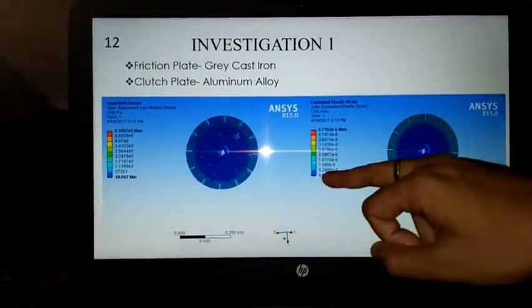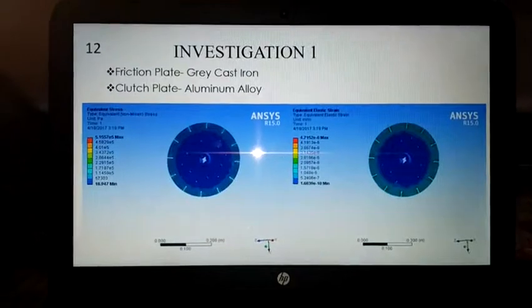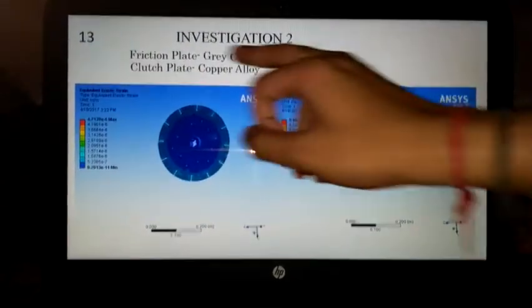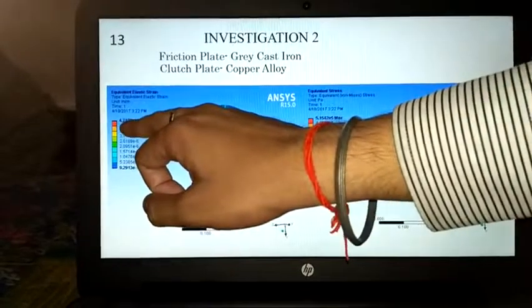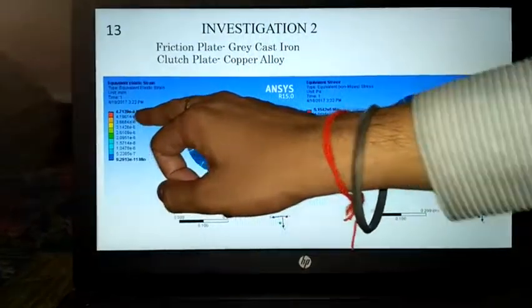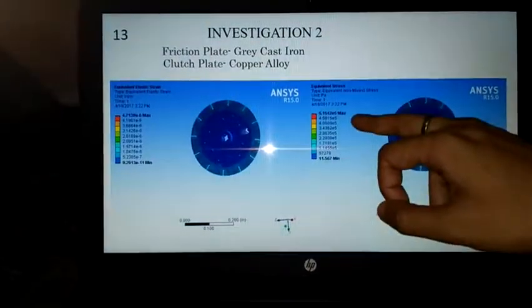Investigation 2: friction plate is grey cast iron and clutch plate is copper alloy. Maximum strain is 4.7139e-6 and equivalent stress is 5.1542e5.